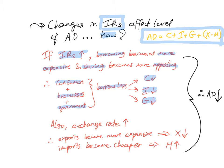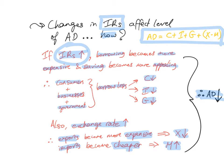Also, when interest rates rise, the exchange rate often rises because more foreign investors come and invest in the country, increasing demand for the country's currency. When the exchange rate rises, exports become more expensive so X decreases, and imports become cheaper so M rises. The net result is C decreases, I decreases, G decreases, X decreases, and M increases — all leading to a fall in aggregate demand.